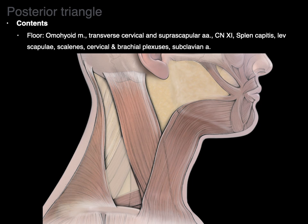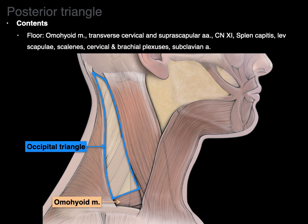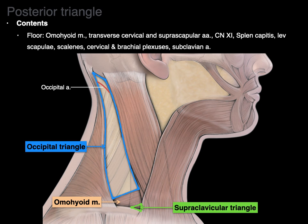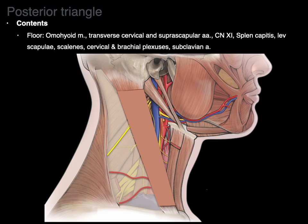Now the floor of the posterior triangle: there's one of the muscles we see in the floor, called the omohyoid. The omohyoid divides the posterior triangle into an upper triangle called the occipital triangle — because that's where the occipital artery is found — and then below it is the supraclavicular triangle, where we have the suprascapular artery and transverse scapular artery.